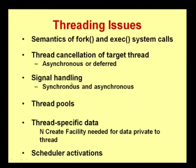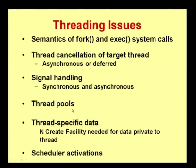These are the two types of thread cancellations. The third threading issue is signal handling, which includes synchronous and asynchronous signal handling. The fourth threading issue is thread pools. The fifth is thread-specific data, which creates a facility for data private to a particular thread — only the data required for that thread gets mapped to it. We will also see scheduler activations: how threads are scheduled and mapped, and how this is used in Windows XP. All these threading issues will be covered in the forthcoming slides.